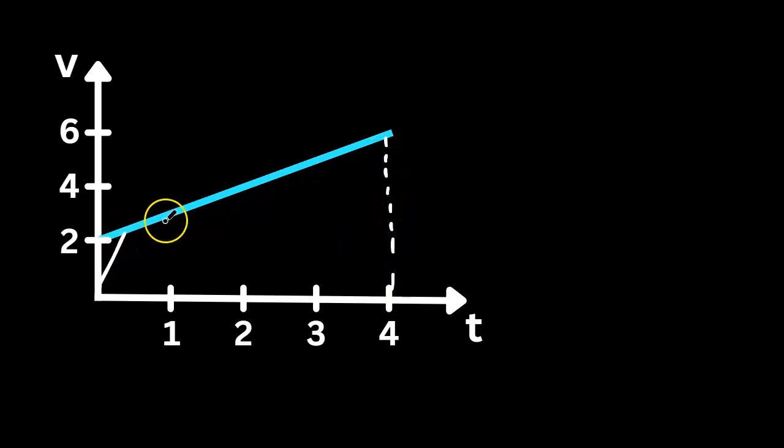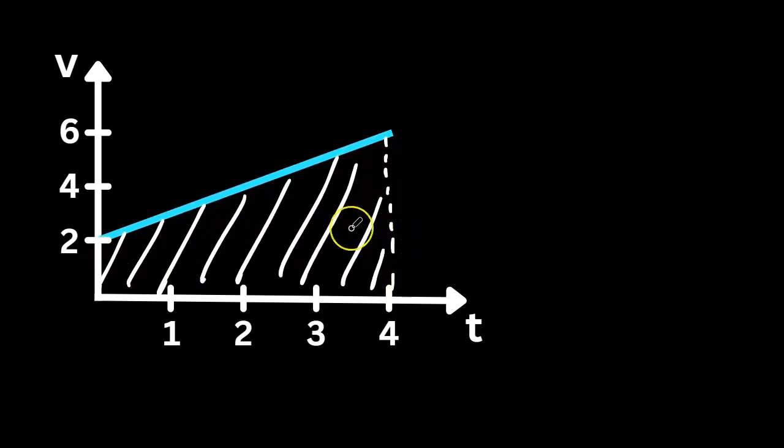Once again, we're going to calculate the area under the curve because that represents the displacement on a velocity versus time graph. And you'll notice that on this area, we can divide it up into a rectangle on the bottom and a triangle on the top. I'm going to calculate the area of the triangle and then the area of the rectangle.